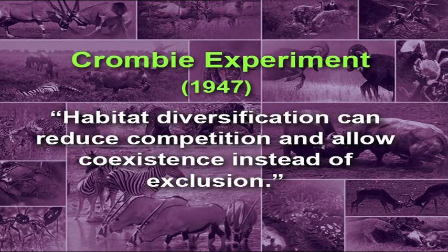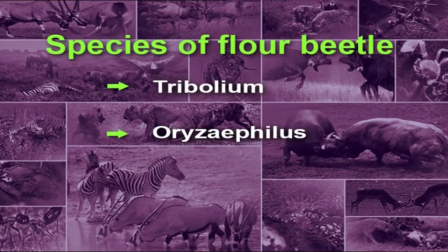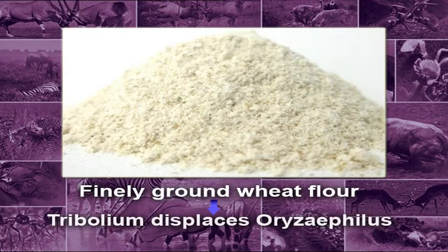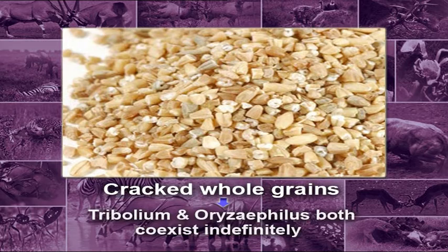It has been proved by the experiments of Crombie in 1947 that habitat diversification can reduce competition and allow coexistence instead of exclusion. He carried out the experiment on two different species of flour beetle — Tribolium and Oryzophilus. He observed that in finely ground wheat flour, Tribolium always displaces Oryzophilus. But when cracked whole grains are used, both species coexist indefinitely.